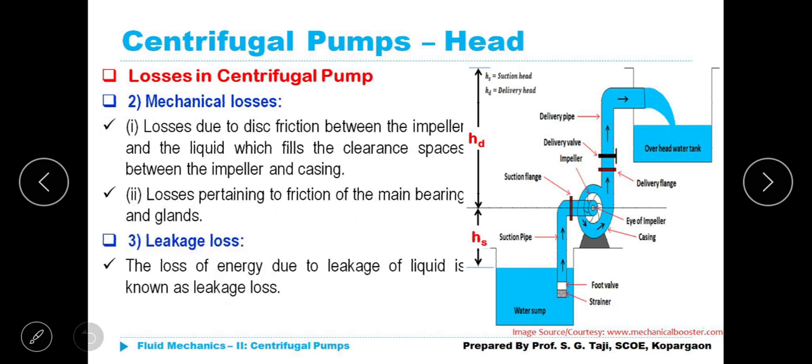Mechanical losses. These losses occur due to disk friction between the impeller and the liquid which fills the clearance spaces between the impeller and the casing. Losses pertaining to friction of the main bearing and glands which are provided to the pump.